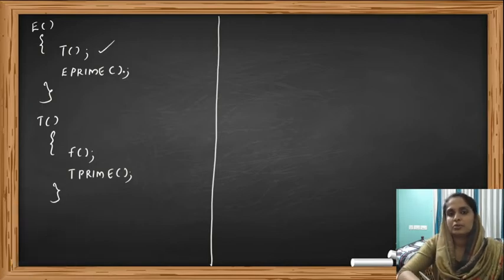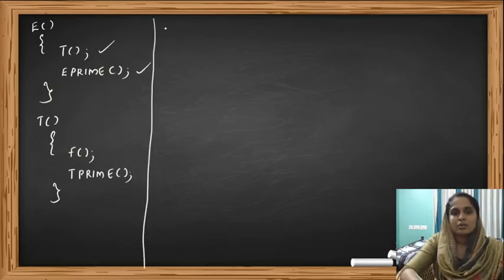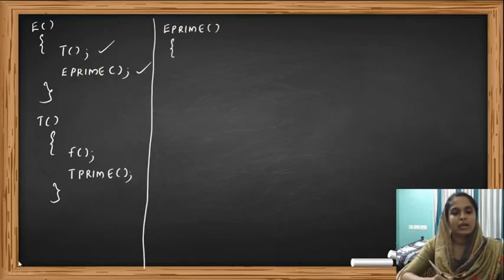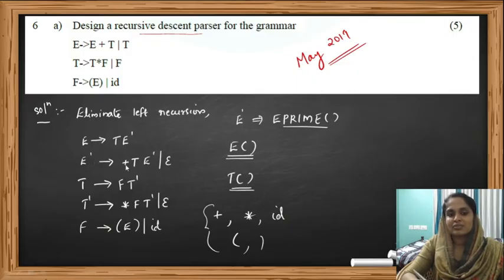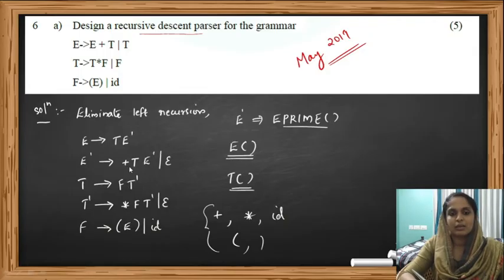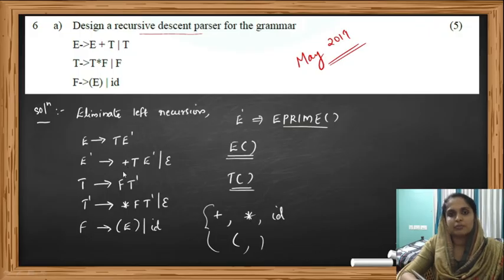Now we have to write the procedure for E prime. The production E' → +TE' | ε has two alternatives. The first production for E prime starts with the terminal plus. Whenever we see a terminal, we have to scan the next input. So when input equals plus, we increment the input (input++), then call the procedure for T, then call the procedure for E prime.